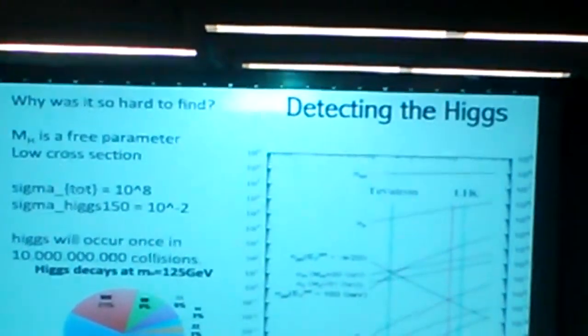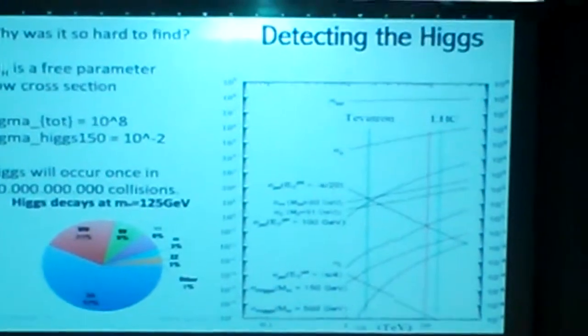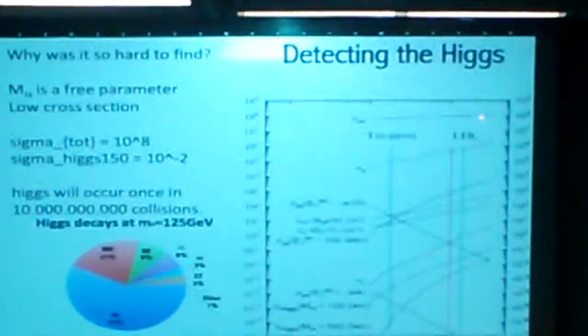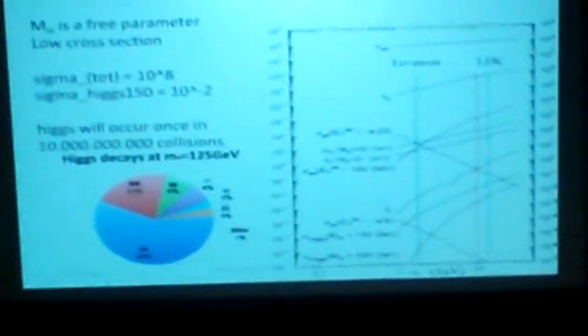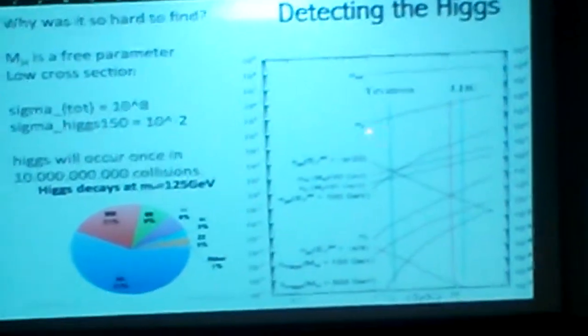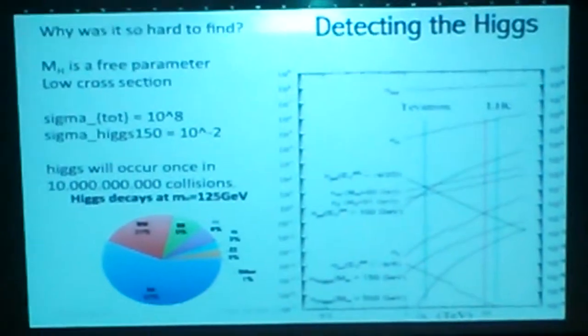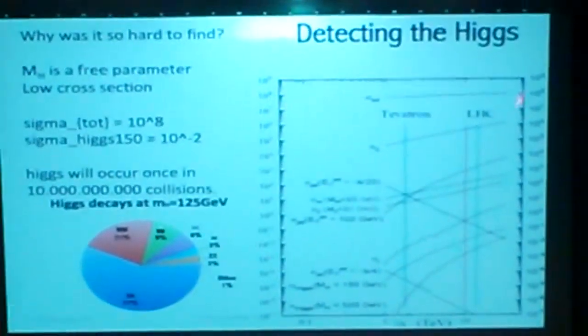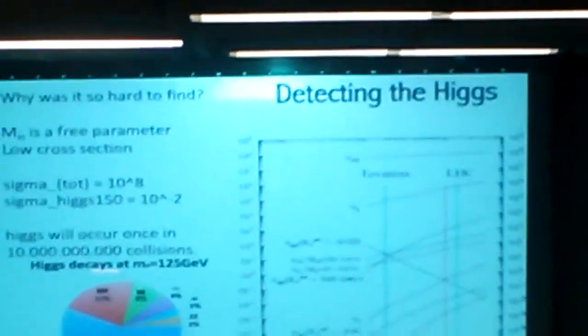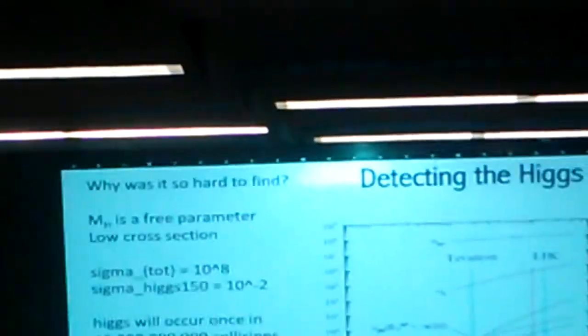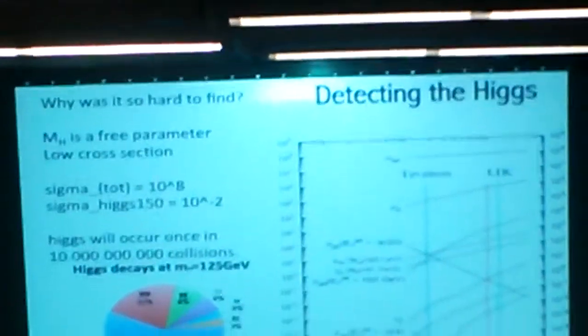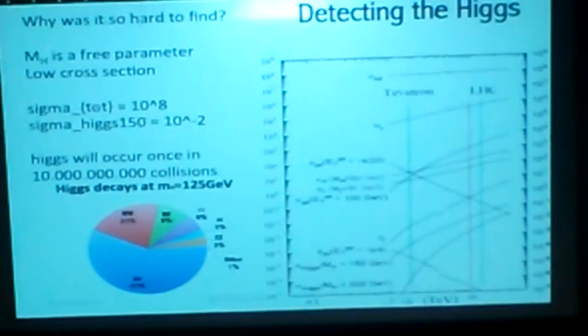You have the scattering cross-section, which is basically the probability of something colliding — it's about 10 to the 8. When you're making these collisions, 99.9% of the time nothing really happens — they just collide and nothing interesting happens. The cross-section for the Higgs at 150 GeV is an order of magnitude like 10 to the 2 compared to 10 to the 8. So you'll get a Higgs about one in every 10 billion collisions. It's not very often, and you need to collide a lot of things for it to happen.